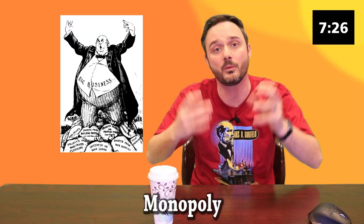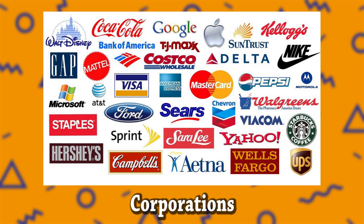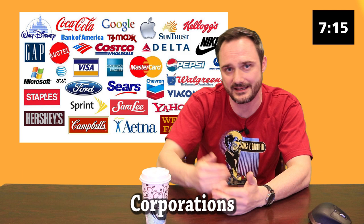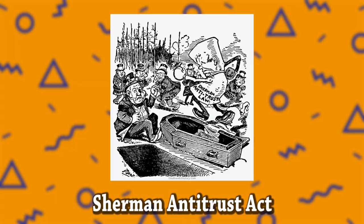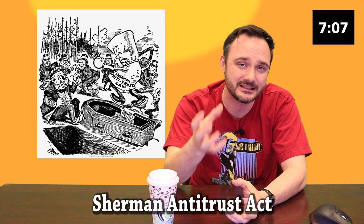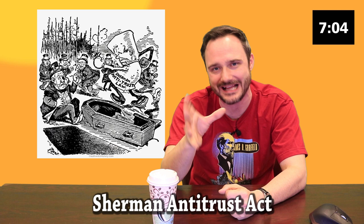If horizontal integration sounds like a monopoly — where a company owns an entire industry — that's because it was. Many companies became corporations, selling shares called stocks to stockholders. Selling those shares gives companies more capital — money to produce — and if the company does well, shareholders earn dividends, their share of the profits. The Sherman Antitrust Act was passed to try to rein in some of those monopolistic corporations.